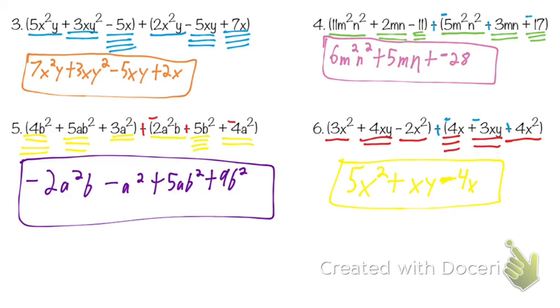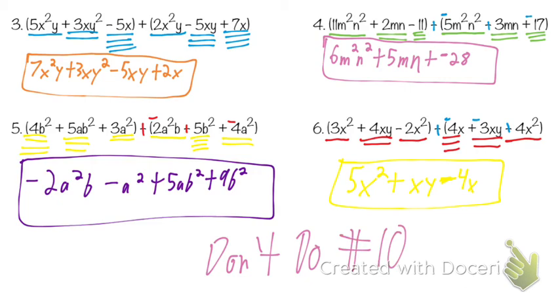For our homework, like I told everyone — don't do number 10. You can cross it out. And don't do number 11 either.